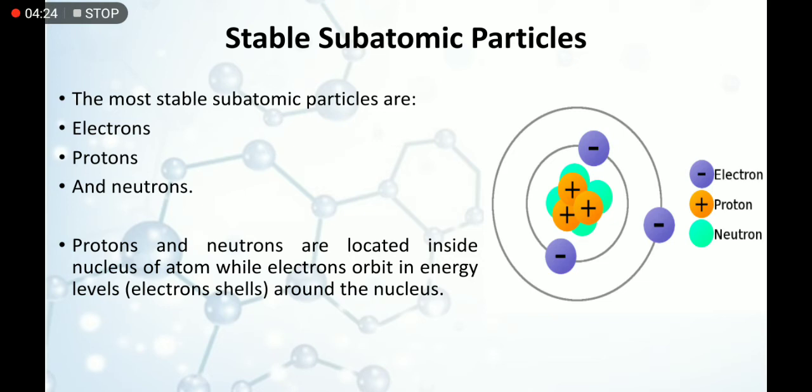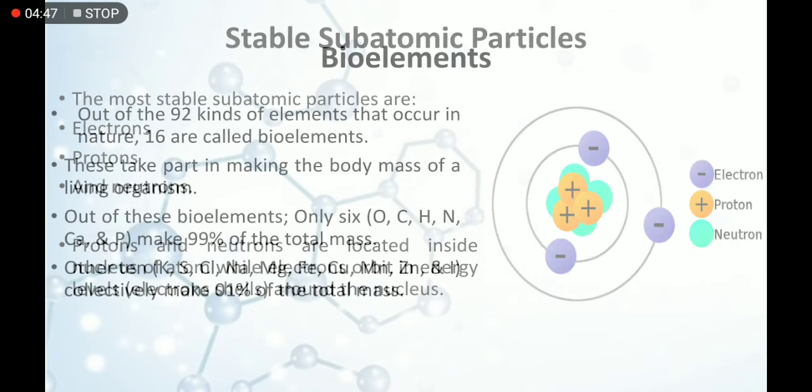If we look at this diagram, we have protons and neutrons in the nucleus. The proton has a positive charge, the neutron is neutral, and the electron has a negative charge.